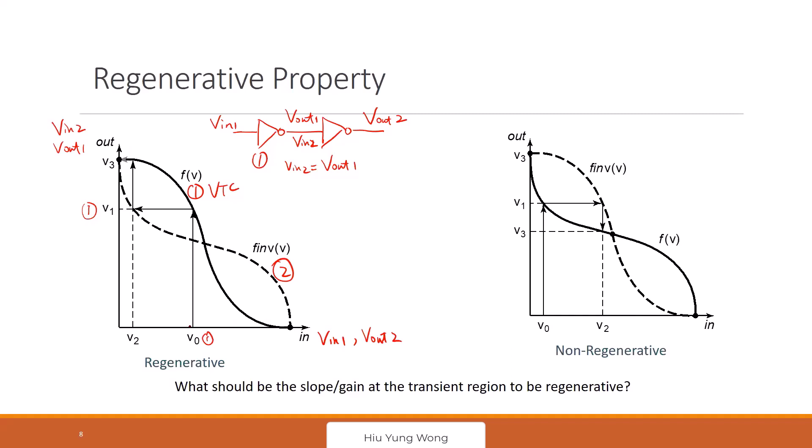So if I trace it, start with V zero. I go up. This is the input V in one. You tell me that the output is going to be V one. Then, now the V one becomes the input to the second gate. So what should I do? I'm going to go up here. But I'm not going to use this dash curve, the second curve. And then based on this second curve, it tells me that the output, this is V out two is V two. Is this okay with everyone? Any question? Make sense?